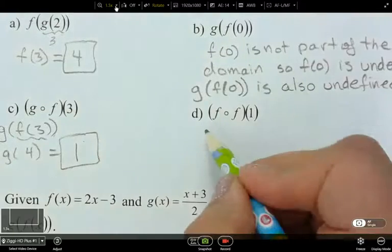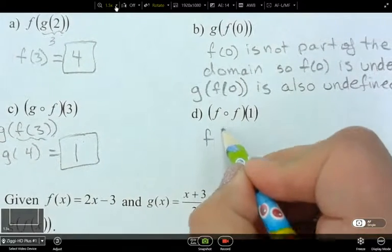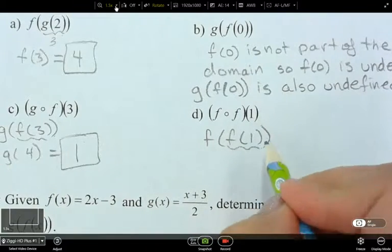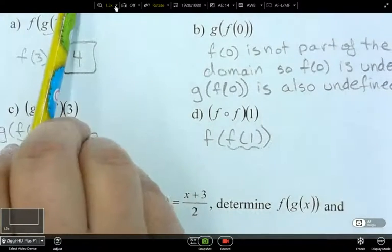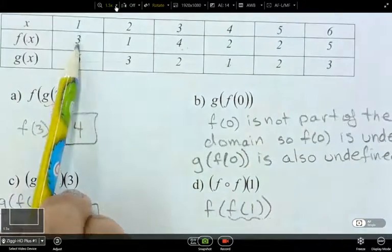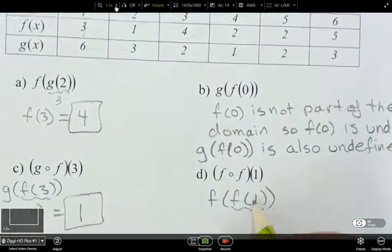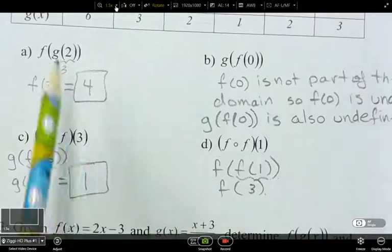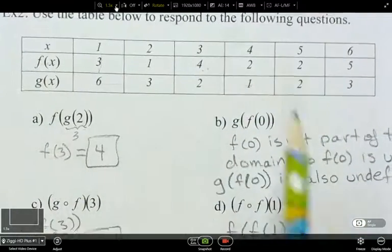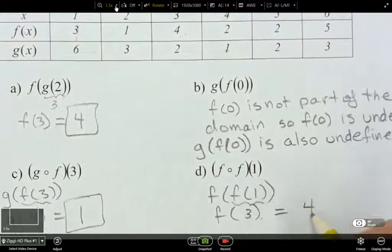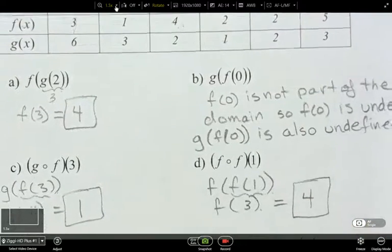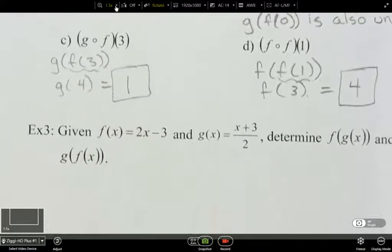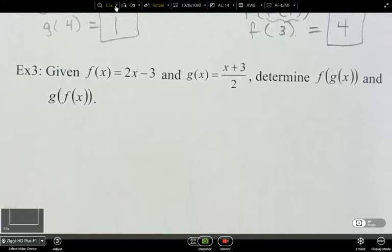So now, this is going to be f of f of 1. So what's f of 1? f of 1 is 3. So that's 3. So now what's f of 3? So f of 3, that's 4. That was fun, hey? I think that's fun.